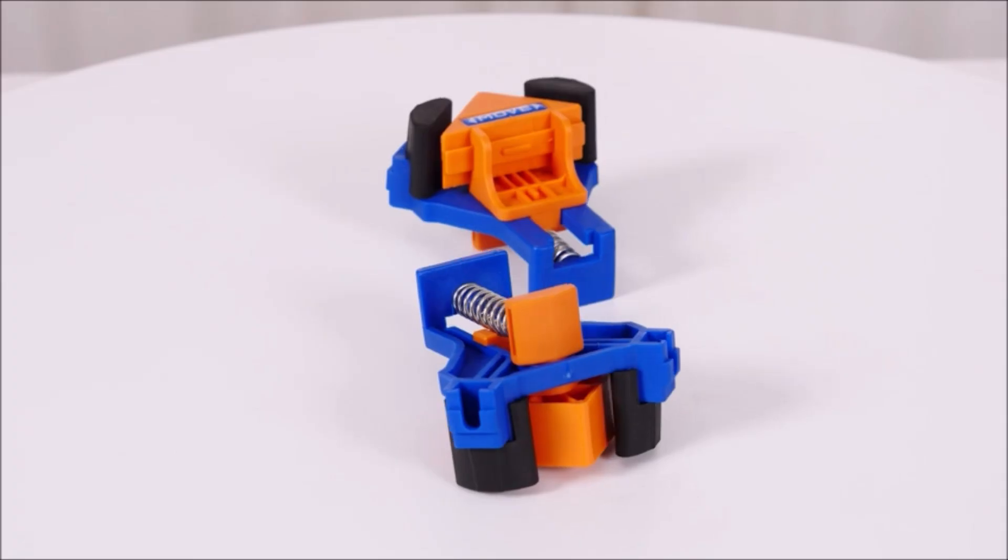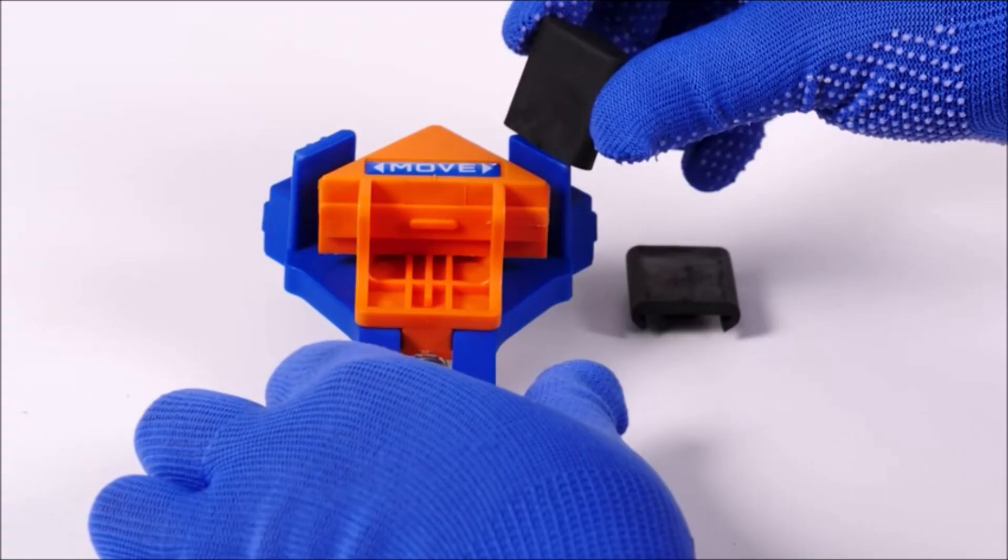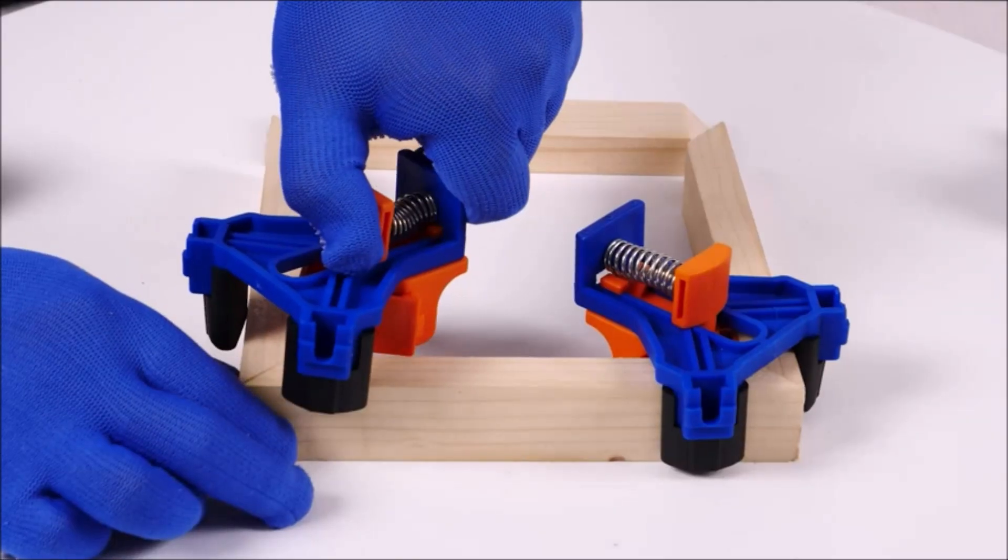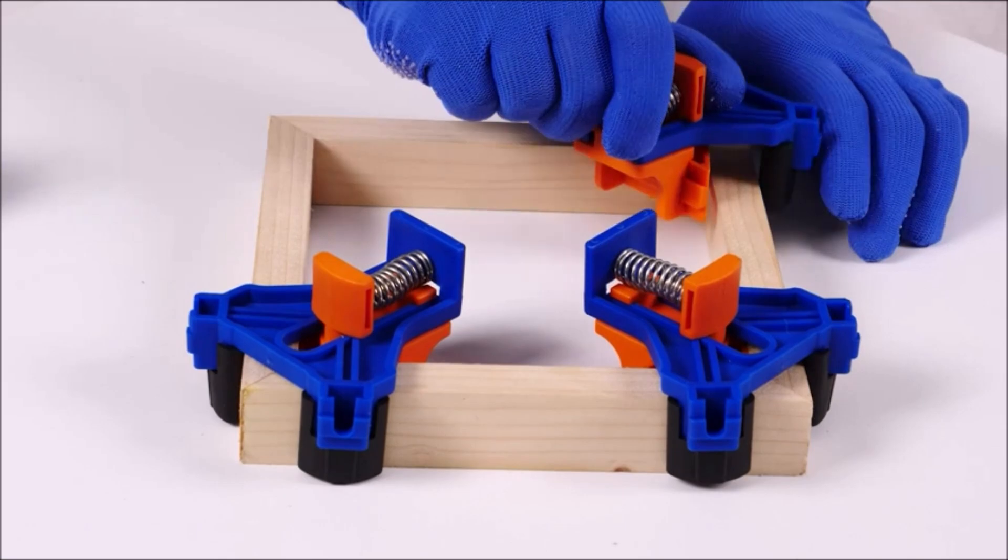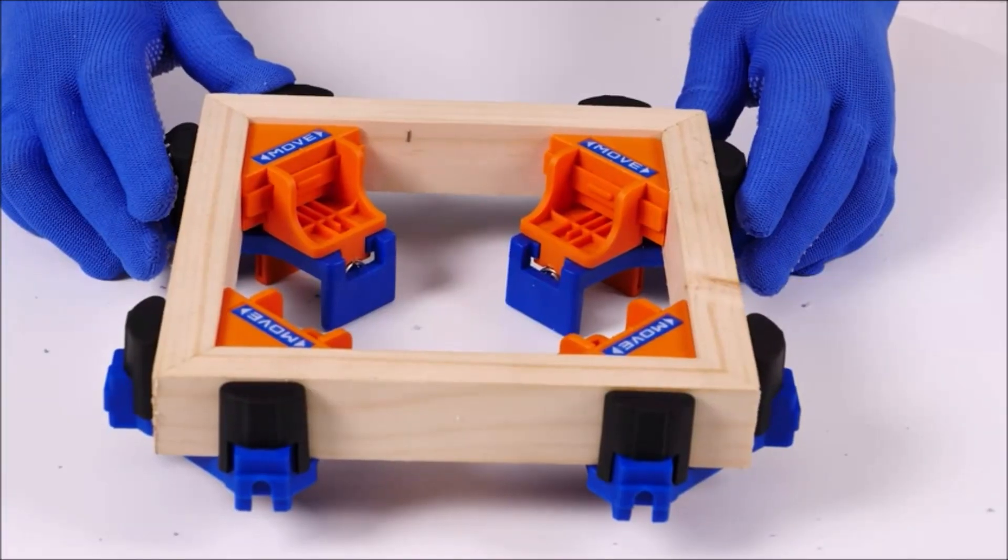Corner Clamps Upgraded 90 Degree Right Angle Clamp Set. Each angle clamp includes two rubber pads to protect your wood pieces from any damage. The pads can be removed for bigger wood pieces to fit.